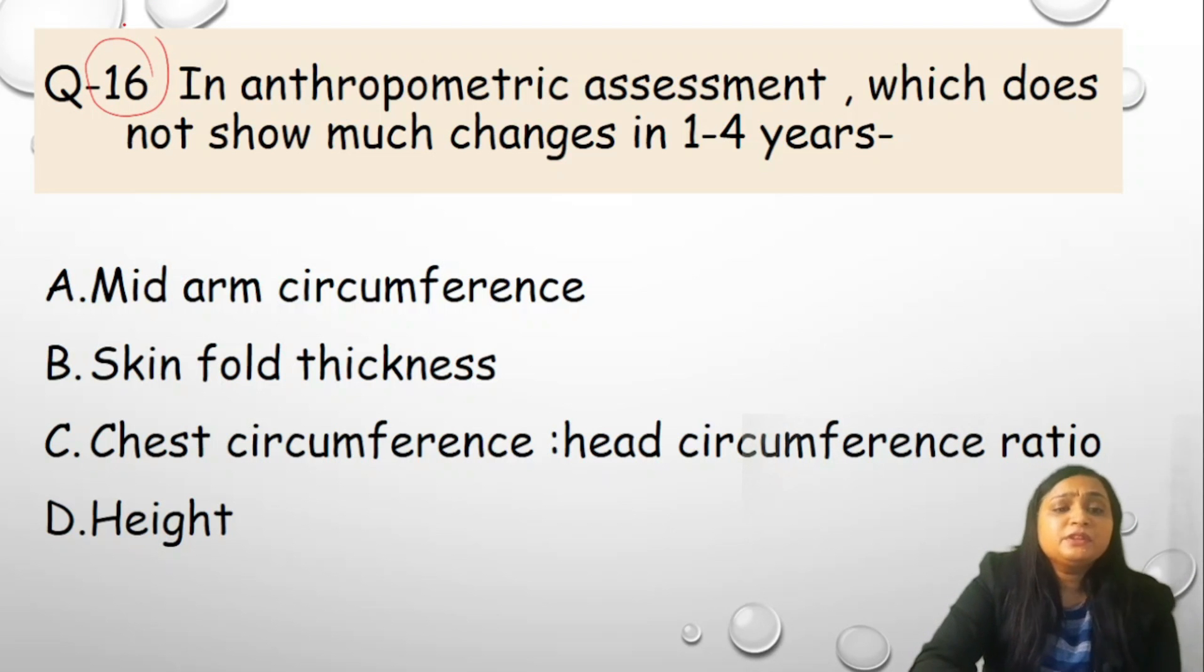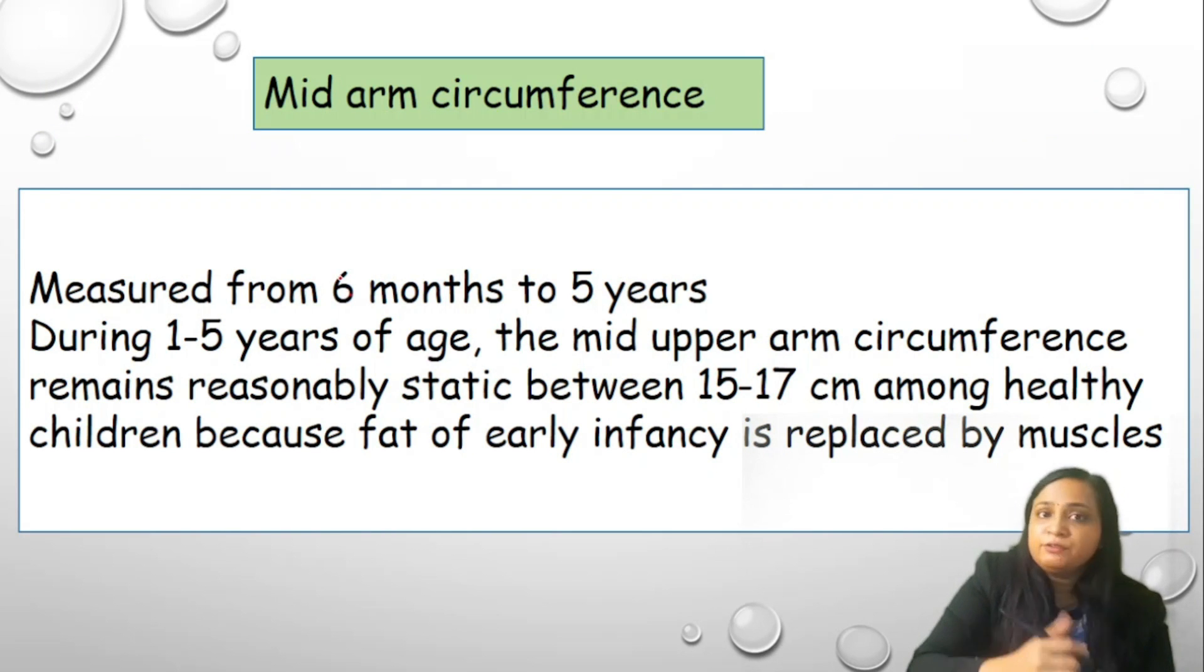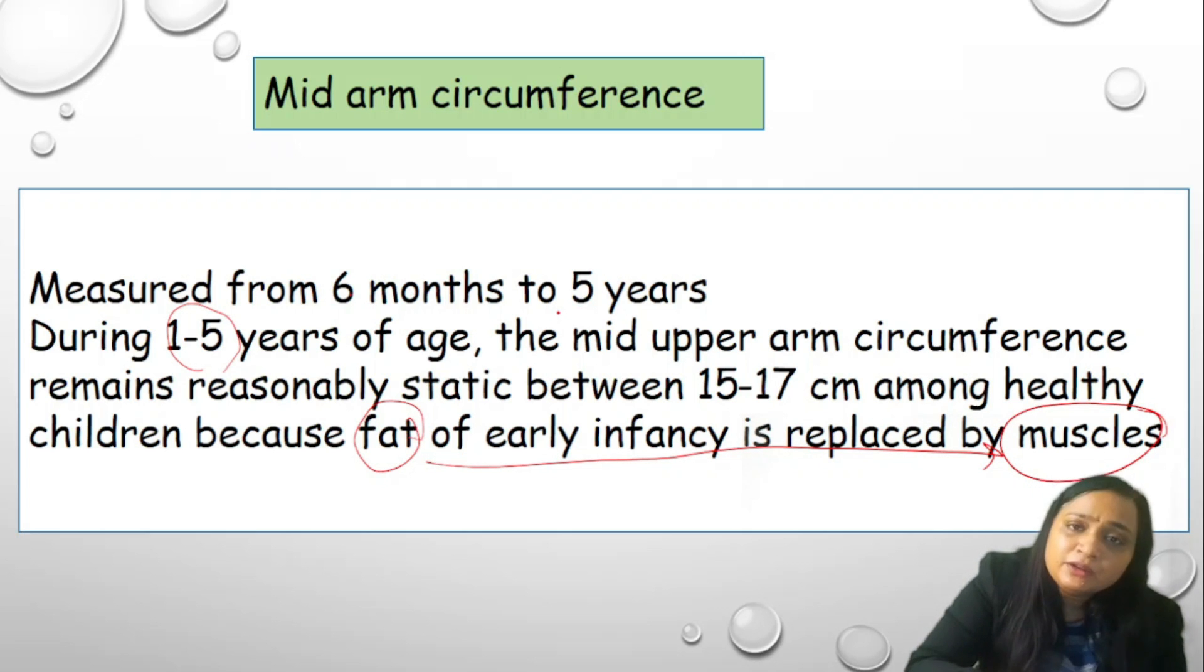Question number 16, in anthropometric assessment, which does not show much change between the age of 1 to 4 years. Specifically, I have not included the concept in growth 2 series because this is independent answer and the explanation is independent from the rest of the concept. What were the options? Mid arm circumference, skin fold thickness, chest circumference versus head circumference ratio or height. Which measurement does not change between the 1 to 4 years? The correct answer is A, mid arm circumference. It is measured between 6 months to 5 years. We all know that. During 1 to 5 years, mid upper arm remains reasonably same because in healthy children, the fat of the early infancy is replaced by the muscle as child grows. Between 6 months to 5 years, all the fat is replaced by the muscle. It stays static between 15 to 17 cm. That's why it is the only criteria between the age of 1 to 4 years which remains static.